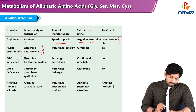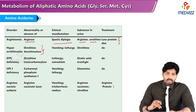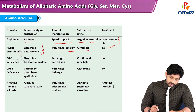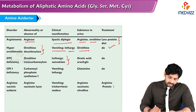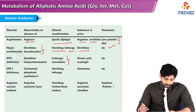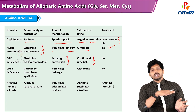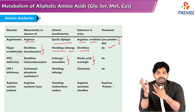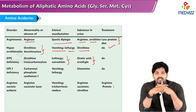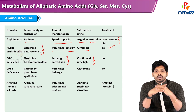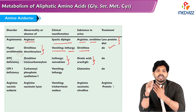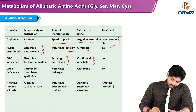Hyperornithinemia is caused by ornithine decarboxylase enzyme deficiency, with vomiting and lethargy; ornithine accumulates in the urine and low protein diet is required. OTC (ornithine transcarbamylase) deficiency presents with lethargy and convulsions. Due to this deficiency, most carbamyl phosphate is diverted to pyrimidine synthesis, and orotic acid — the end product of pyrimidine catabolism — appears in the urine. Low protein diet is prescribed.